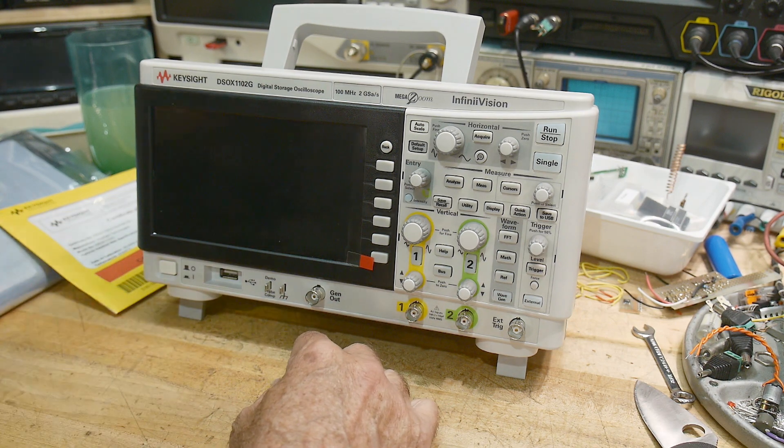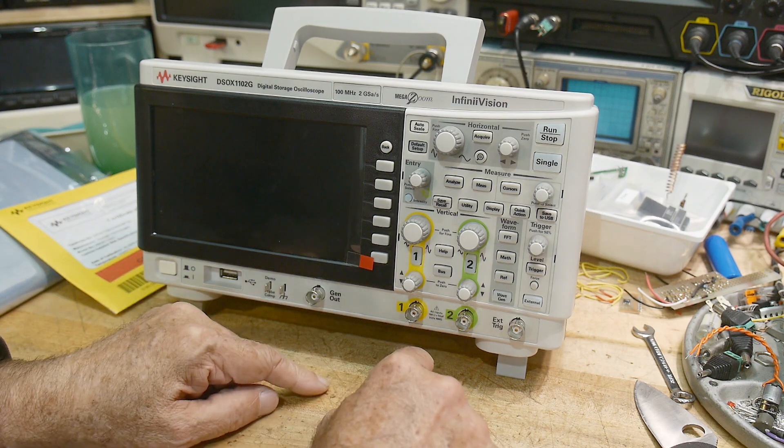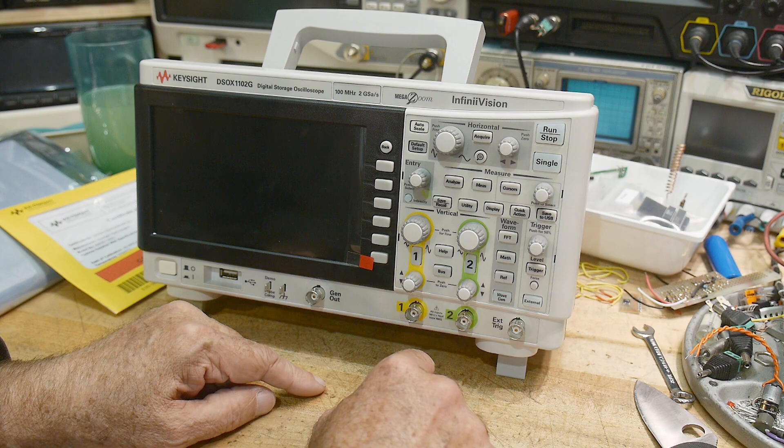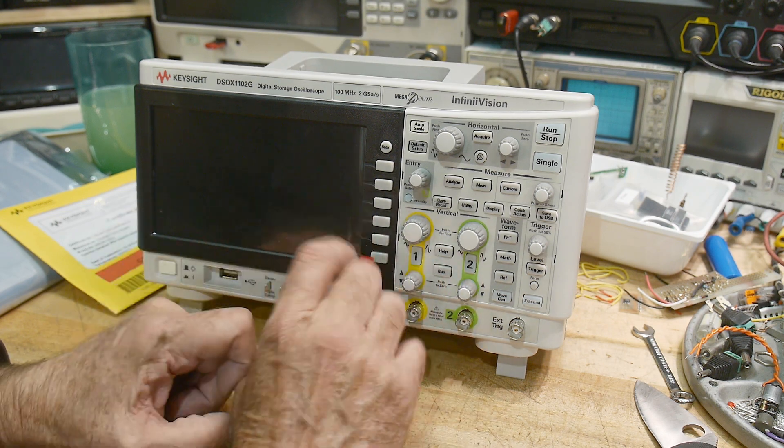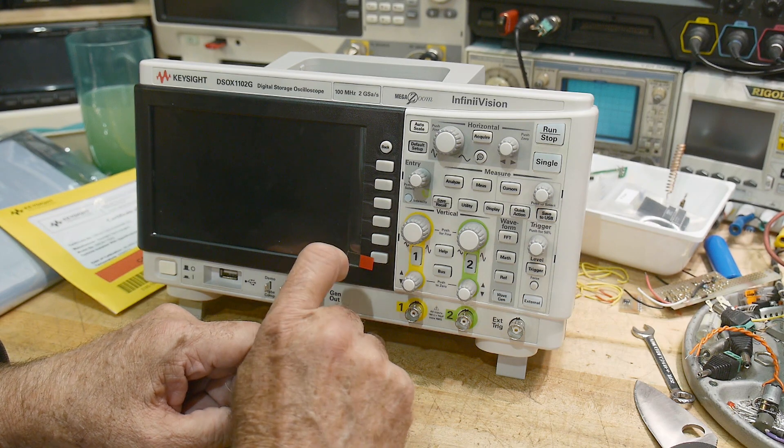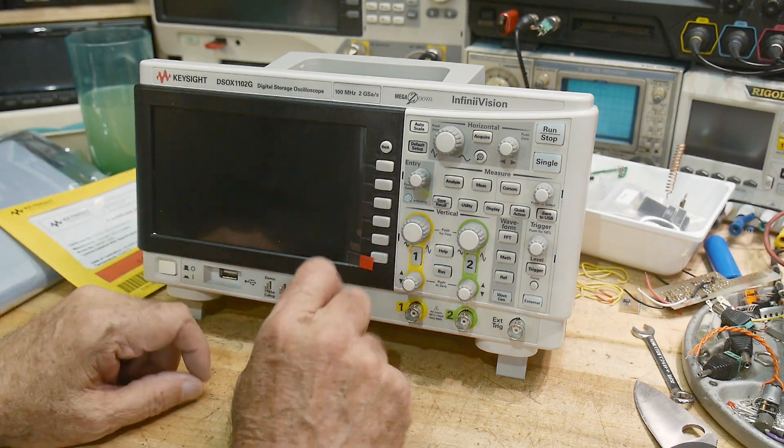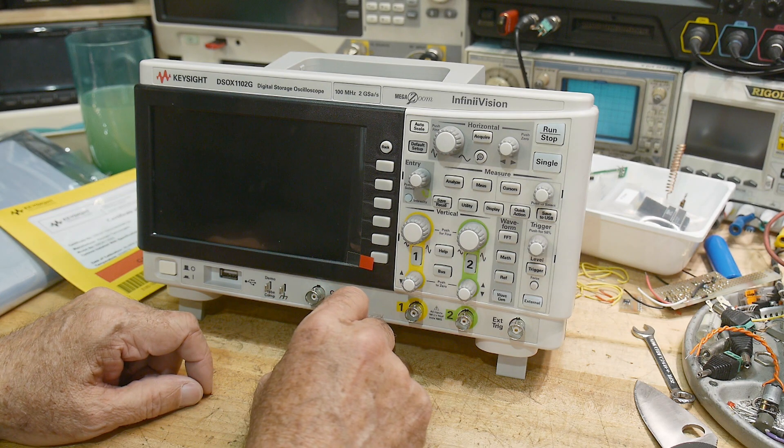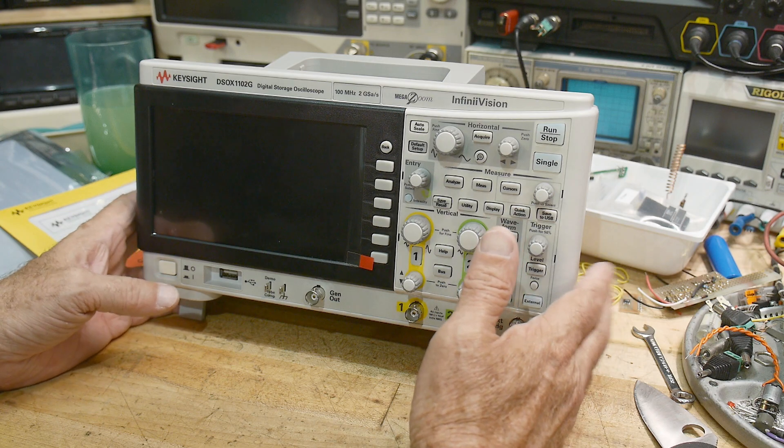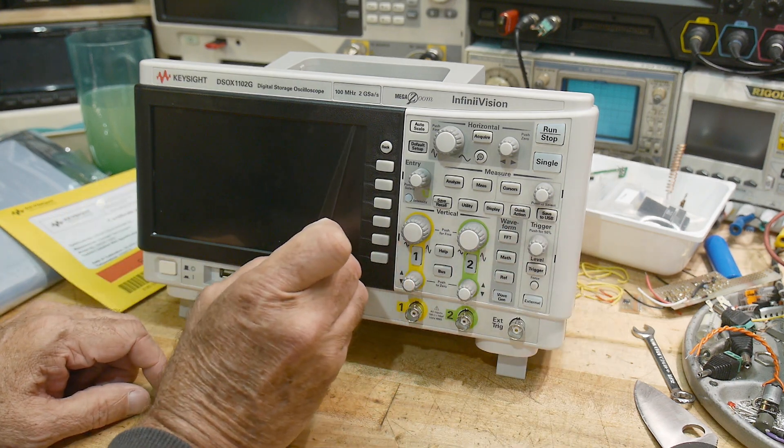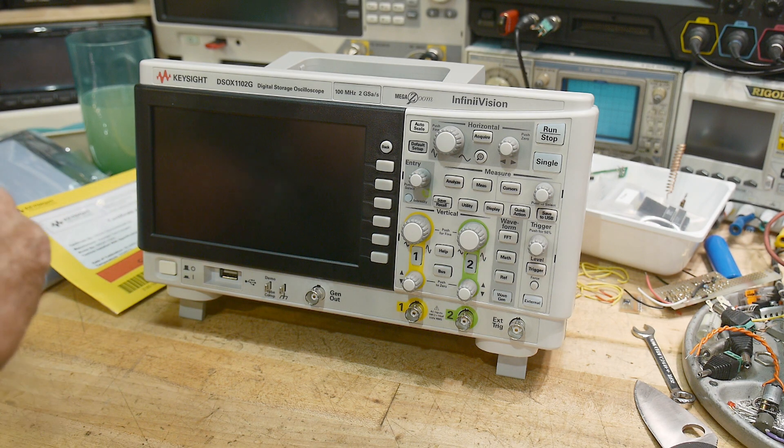I've got a power supply and a frequency counter, a Fluke DVM, a real nice one. And I have a old Tektronix Sony oscilloscope. It's a 60 megahertz oscilloscope, half analog, half digital. And I am going to replace that with this. Having a nice digital scope on my bench will be good.